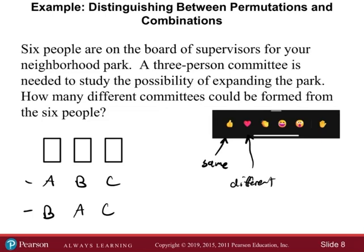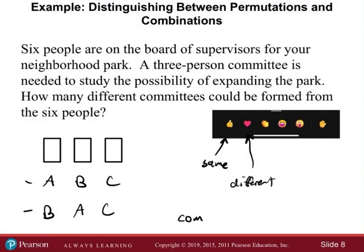If we have a three-person committee with persons A, B, and C, and we rearrange it to B-A-C, these are actually the same three people. So in this case, if we change the order it's considered the same — that means we're working with a combination. This is an example of a combination. The order in which the three people are selected does not matter since they are not filling different roles.